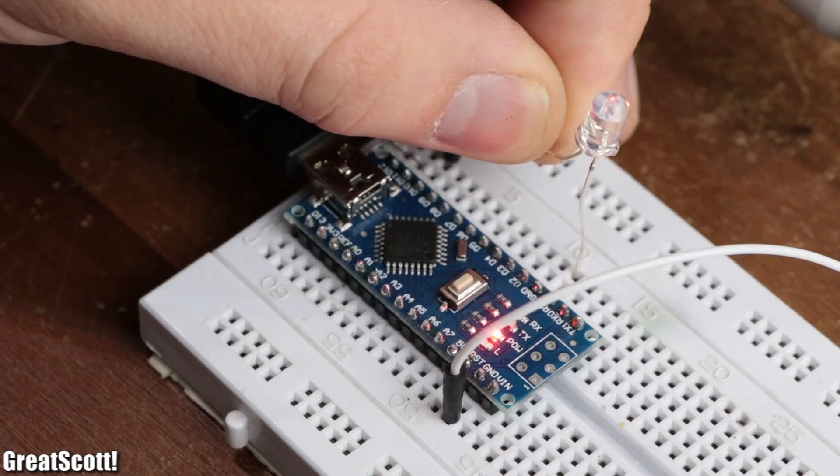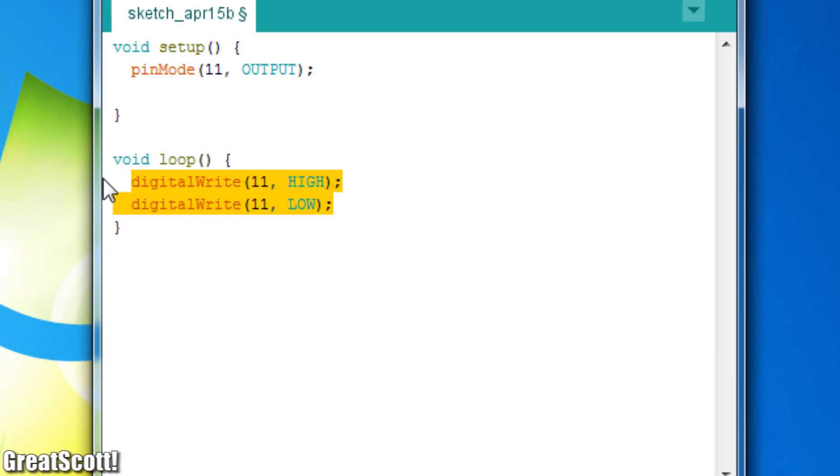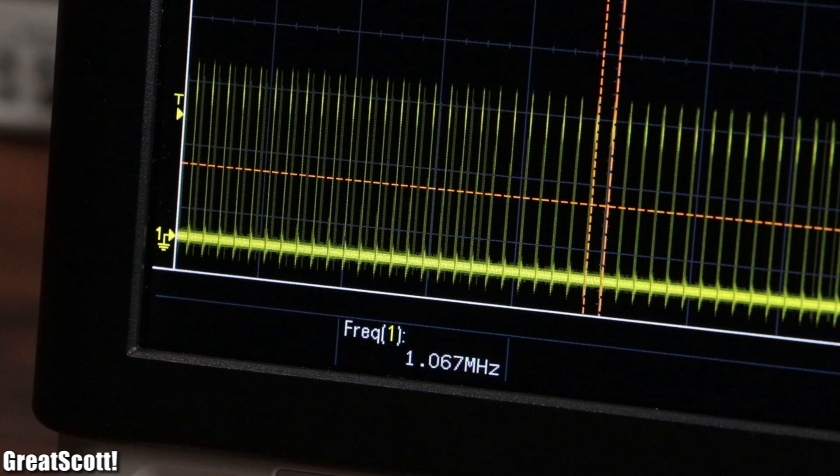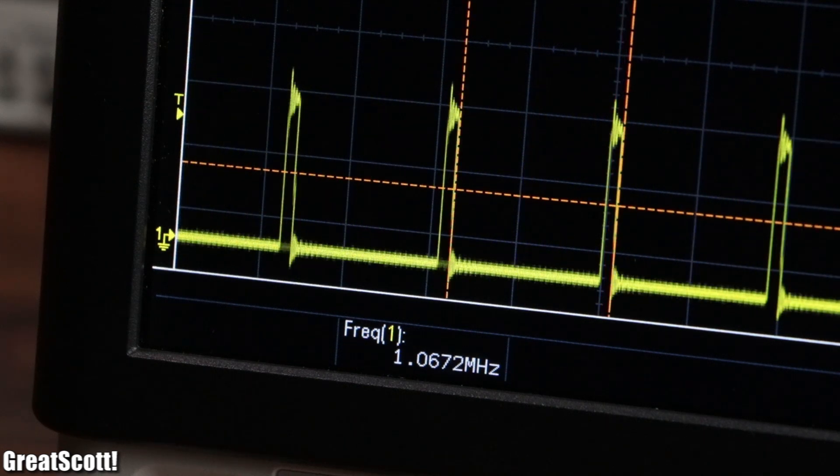And for many applications this is good enough. But what if I told you that by utilizing two weird lines of code instead of the digital write function, we can increase the frequency up to 1 megahertz.